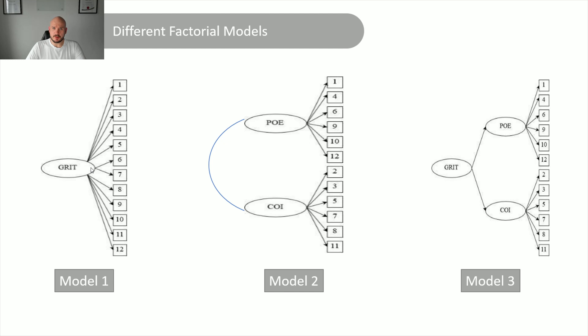grit scale to give you a practical example. So according to Duckworth and her instrument, grit is made up of two factors. It's made up of consistency of interest and perseverance of effort. So basically perseverance and interest, or passion as she calls it. So passion and perseverance.